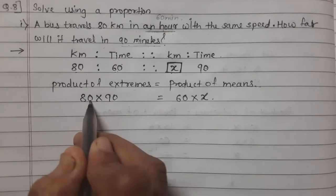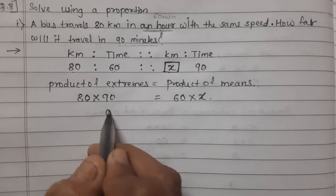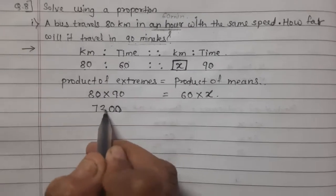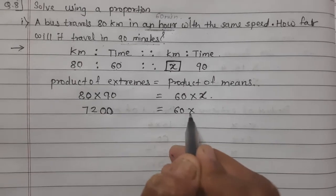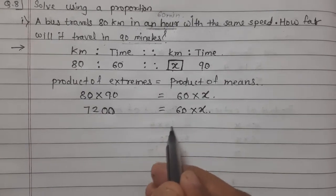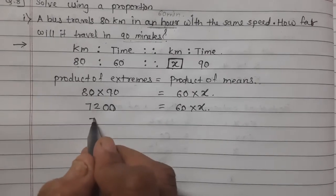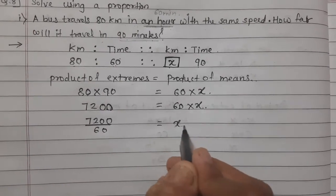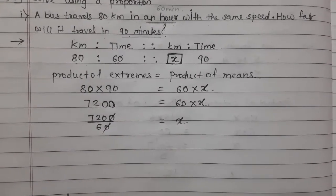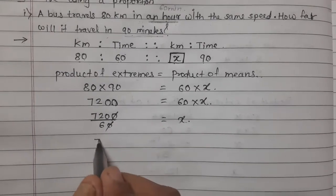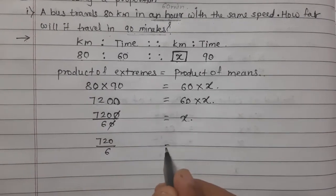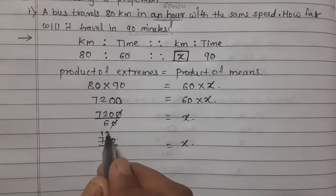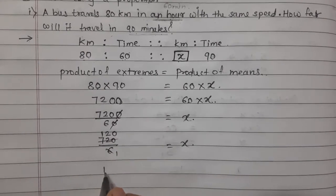Let's multiply: 80 × 90 — count the zeros, that's two zeros, and 9 eights are 72, so 7200. So 7200 = 60x. Now 60 is multiplied; transferring it gives 7200 divided by 60. Cancel the zeros: 720 divided by 6. 6 ones are 6, 6 twos are 12, 6 zeros are 0, giving 120.